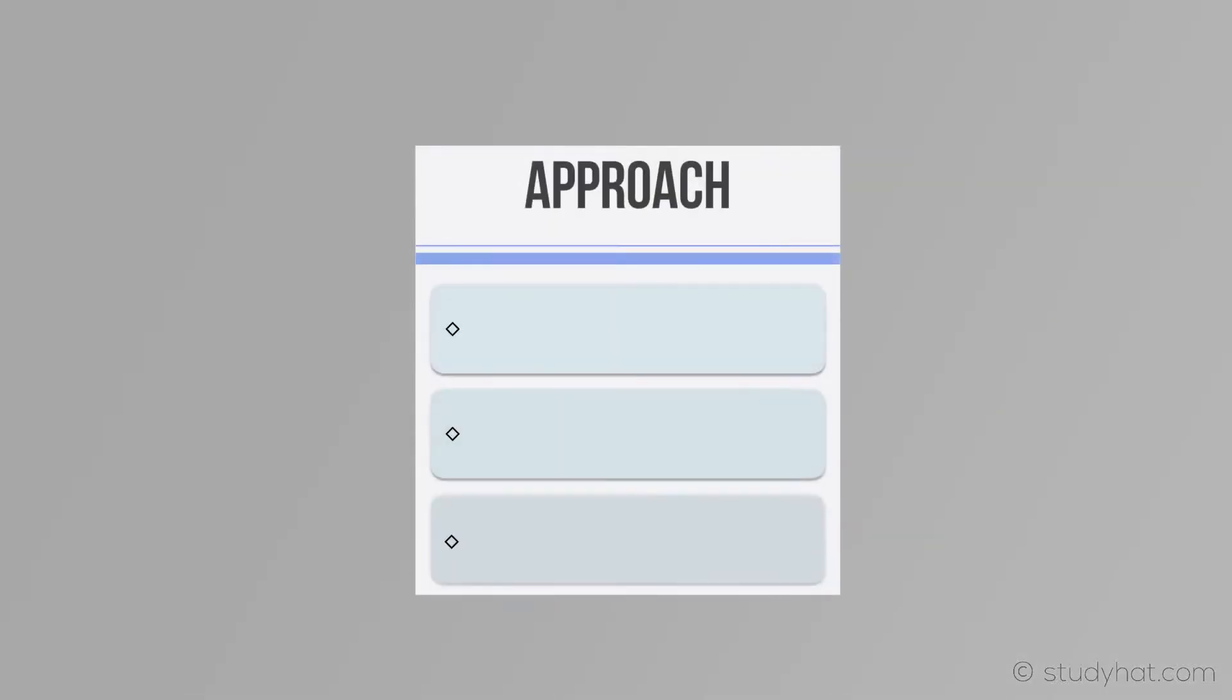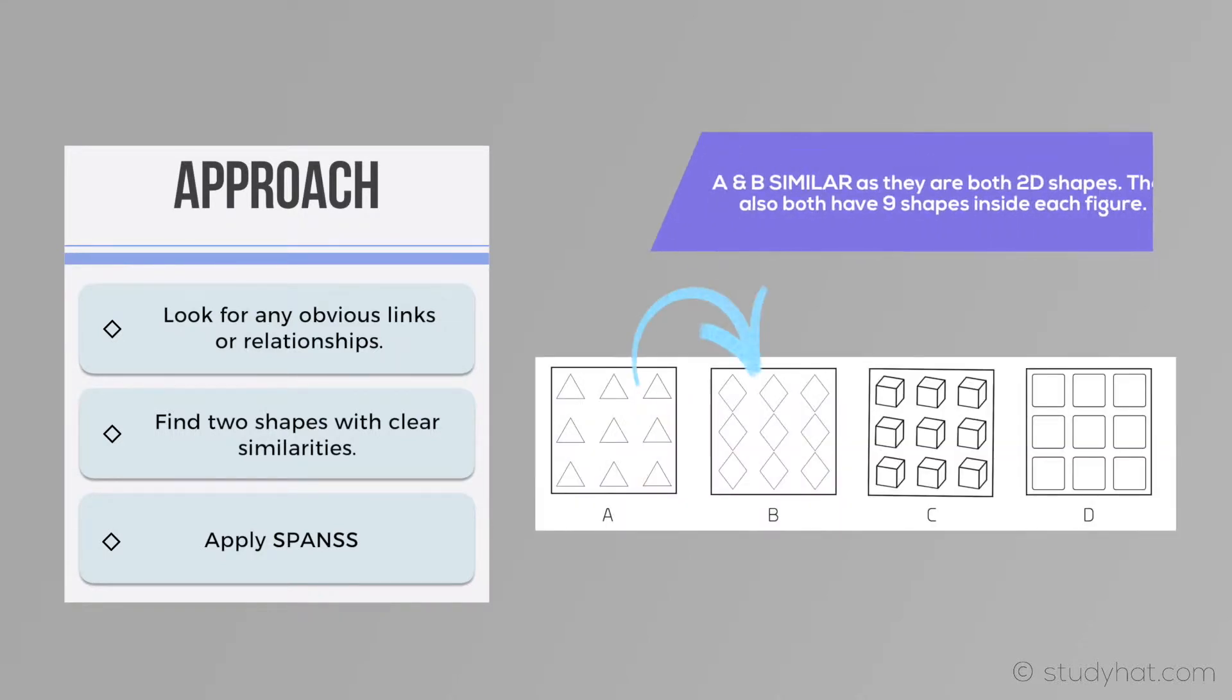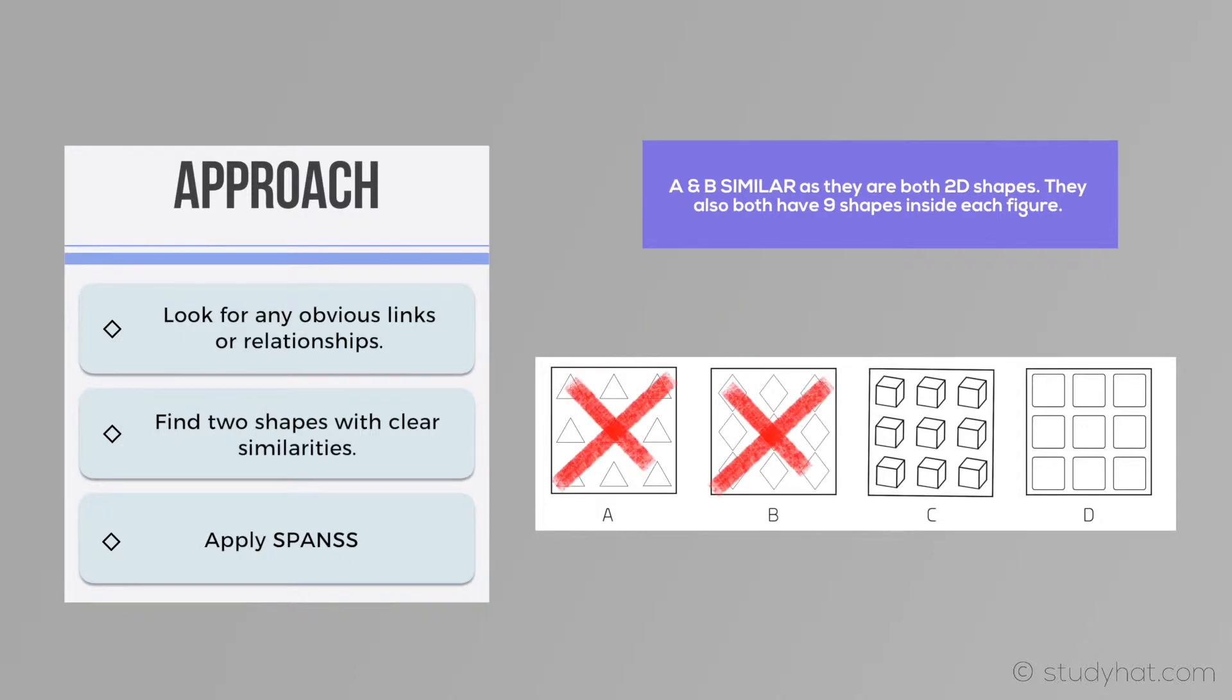The approach. Our first step when looking at any odd one out question is to look for any obvious links or relationships. This could be something you can spot immediately such as a certain answer that just looks out of place or two shapes with clear similarities. By spotting two shapes with clear similarities you can now eliminate those two. As you now know neither of those can be an odd one out, which makes everything simpler because now you'll have a much easier decision to make when it comes to spotting the answer.